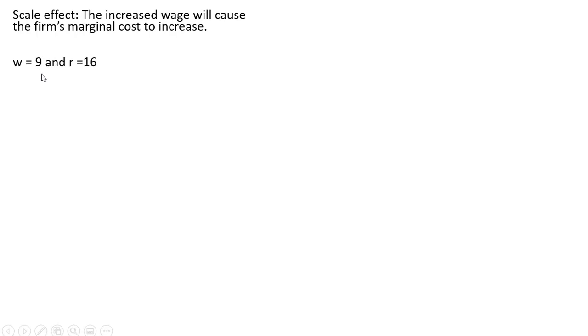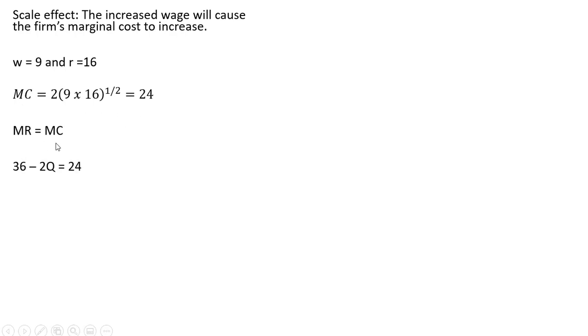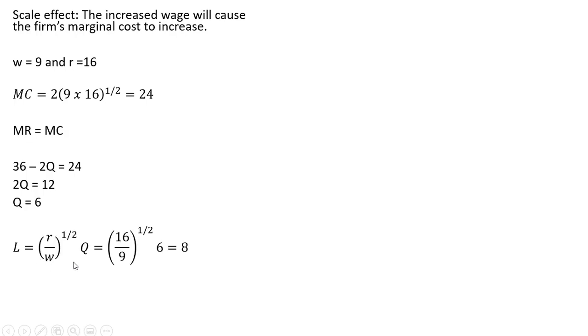Now for the scale effect. The increased wage will cause the firm's marginal cost to increase, which will affect the profit-maximizing output level. When the wage is $9, plugging into our marginal cost equation gives a marginal cost of $24. Setting marginal revenue equal to this new $24 marginal cost, the firm produces less output — only 6 units. With this higher marginal cost and Q=6 at the new input prices, the firm would use only 8 units of labor and 4.5 units of capital.